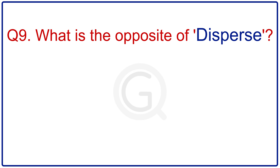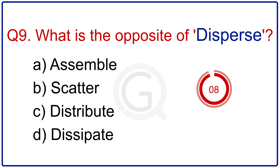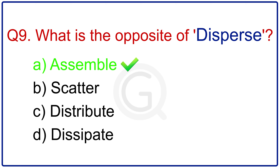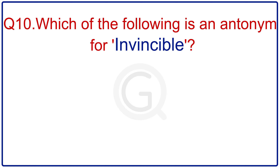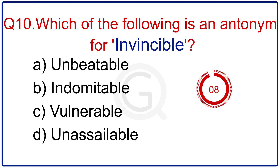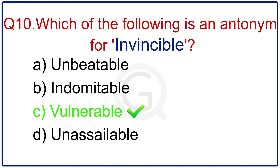What is the opposite of disperse? The right answer is assemble. Which of the following is an antonym for invincible? The correct answer is vulnerable.